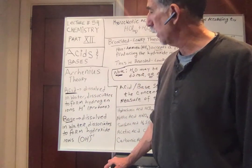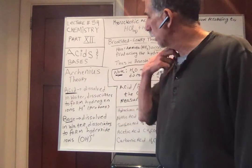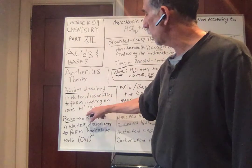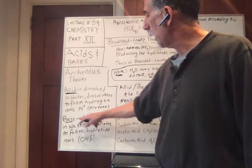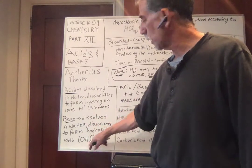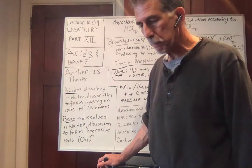So theory of Arrhenius, acids donate, dissociate to form protons, and bases dissolved and they dissociate to form hydroxide ions.